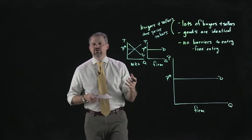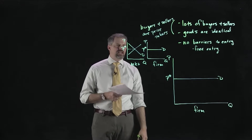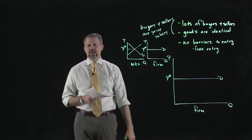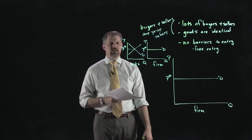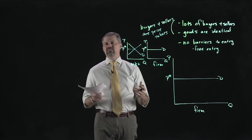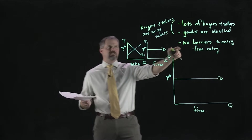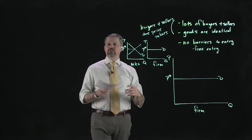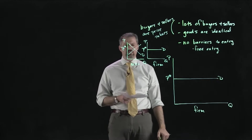There aren't a ton of real-world examples of perfect competition. The stock market is a good example. Commodity markets like corn and soybeans are often used. The gasoline market can be an example, but we have to be careful — a small town with just a couple of gas stations violates the assumption. In a bigger city with lots of gas stations, it behaves very much like a perfectly competitive market.